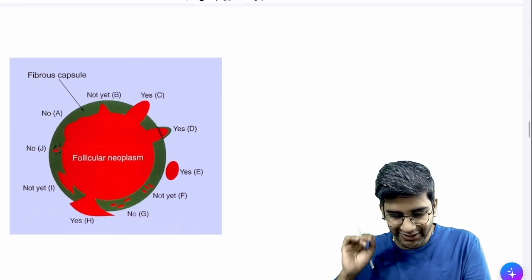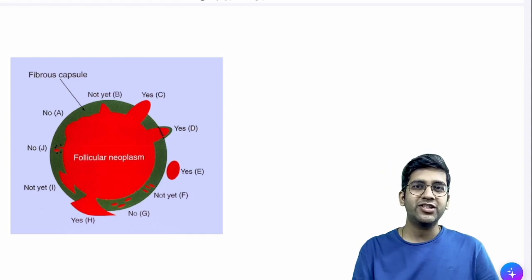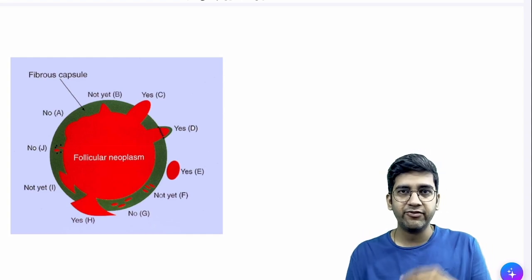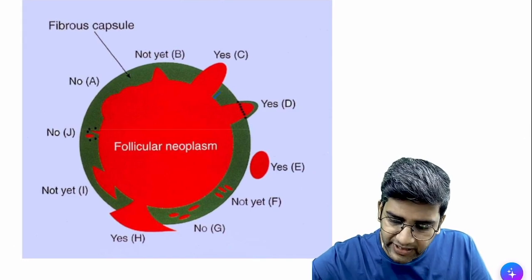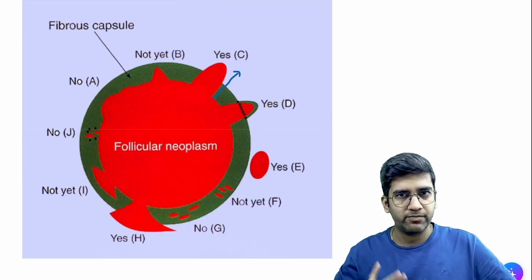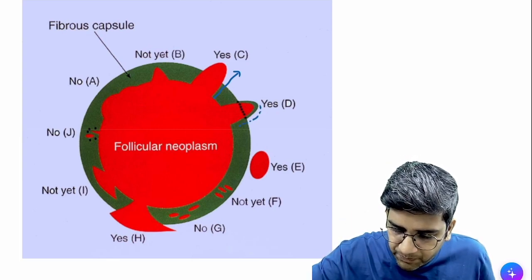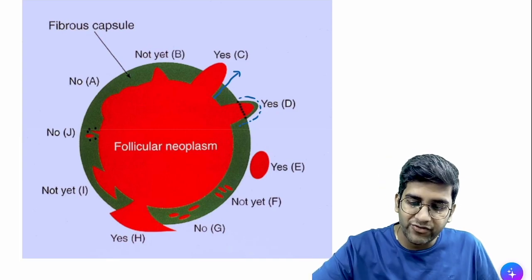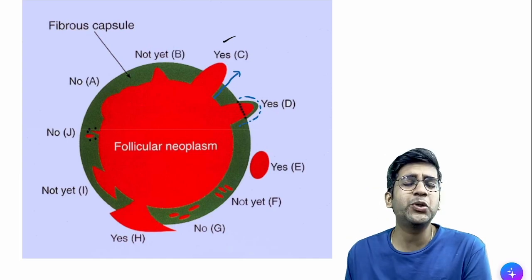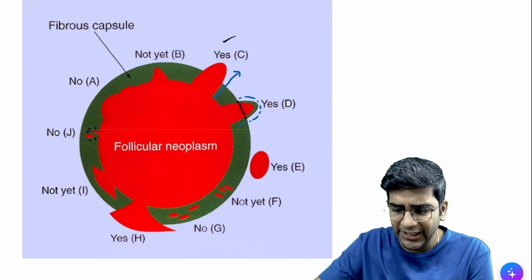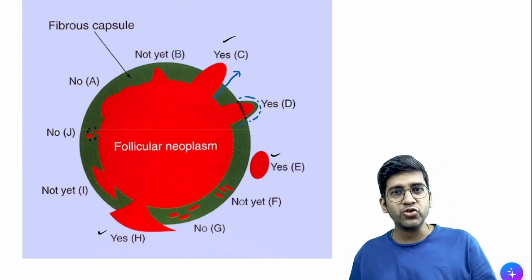The goal is to identify capsular invasion, because this is what most students find very difficult. This is a very old picture from the WHO. It clearly states that if the tumor has gone beyond the capsule, that is invasion. If you find type C or E, no one is ever going to worry about it — it's very simple.